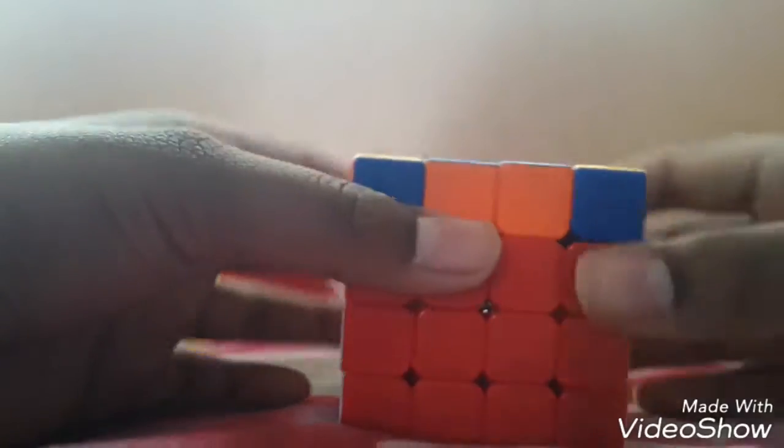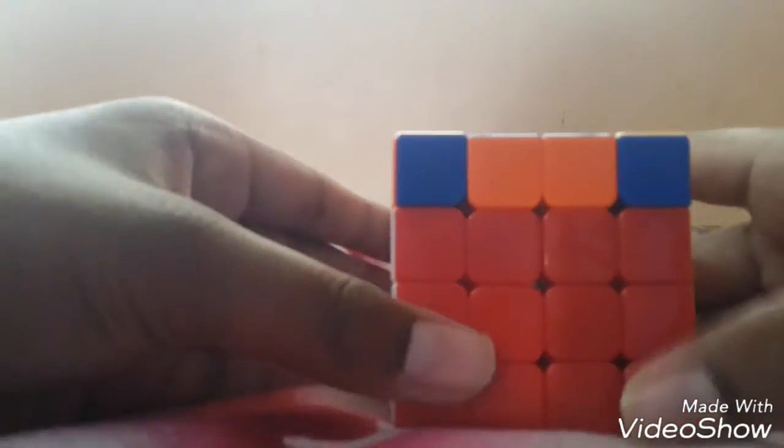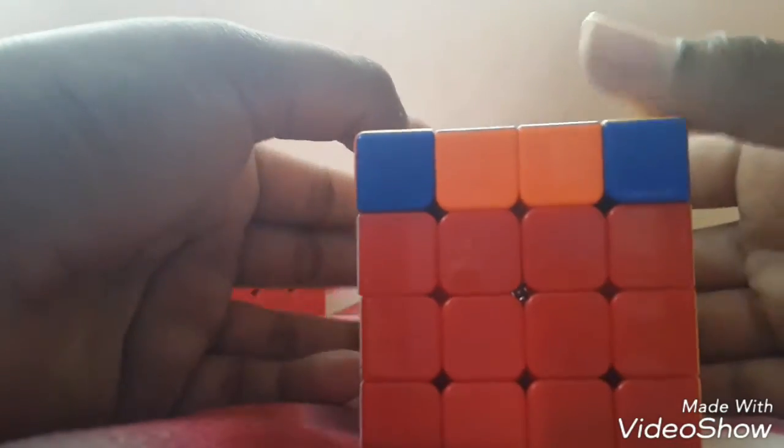So this algorithm we have to do at the place where the edge should be turned properly. We have got the cross and let's go for the orientation of the pieces. If you need to know the 3x3 algorithms like F R U R' U' F, please watch my 3x3 videos for that.